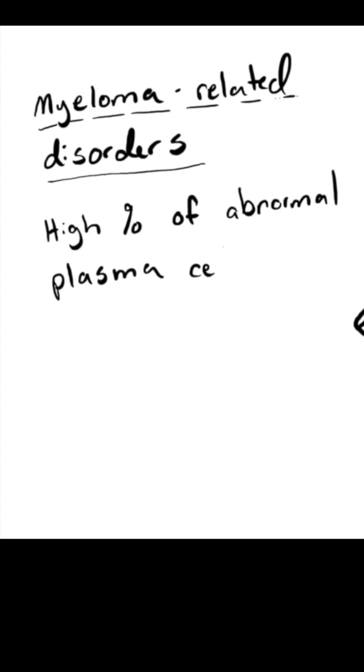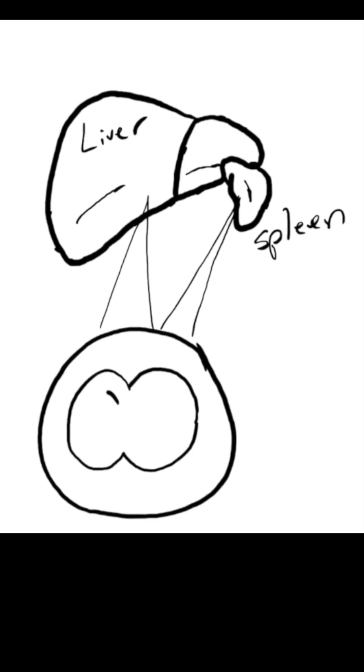Myeloma-related disorders are uncommon and not well-understood cancers in cats. In dogs, the diagnosis of a similar condition called multiple myeloma often involves finding a high percentage of abnormal plasma cells in the bone marrow, along with other indicators like specific proteins in the blood or urine and bone lesions. Historically, these criteria have sometimes been applied to cats. So, is it the same picture in cats?